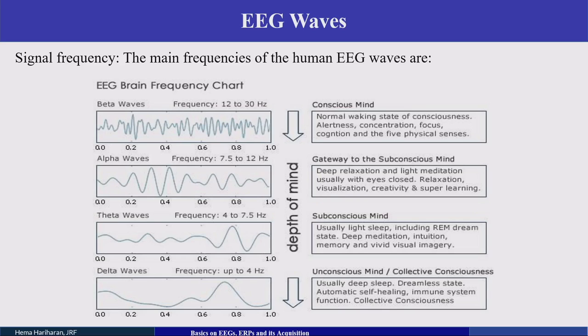Theta waves, in the range of 4 to 7.5 Hz, are associated with a deeper subconscious state — a light sleep or deep meditation. Delta waves, up to 4 Hz, are associated with the unconscious mind during very deep sleep. These are the different EEG waves present in humans based on different frequencies.